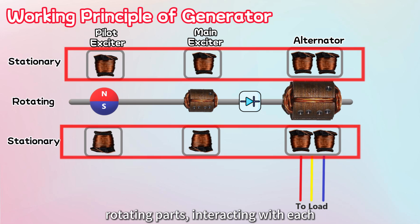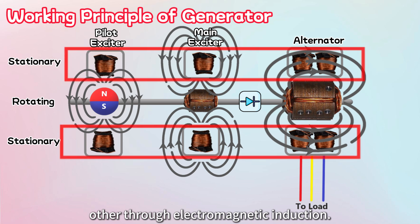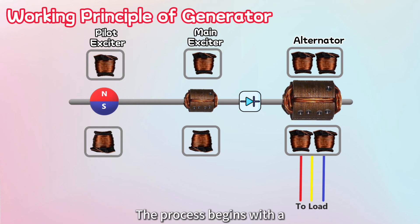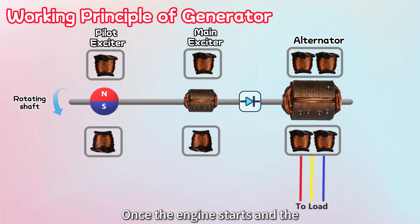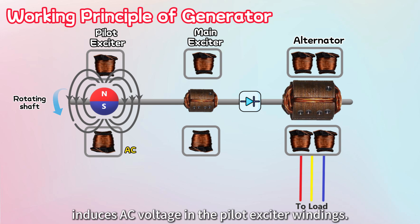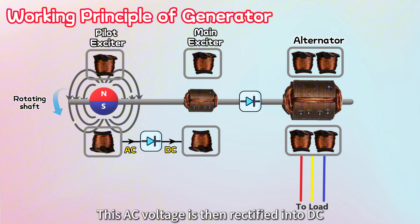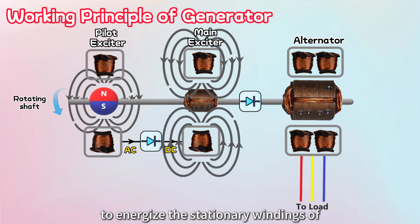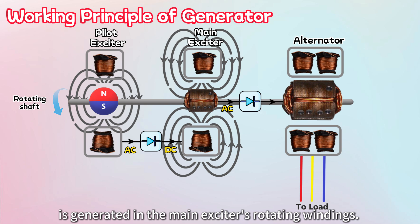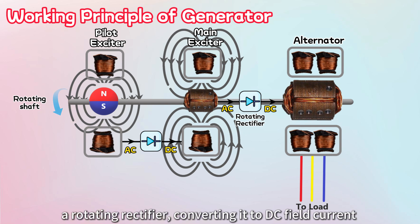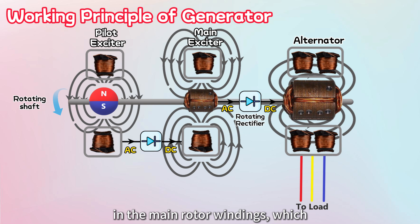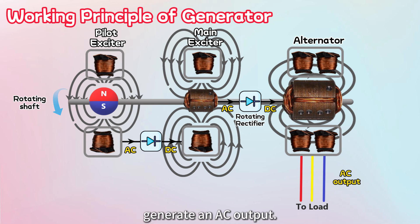These exciters contain both stationary and rotating parts interacting through electromagnetic induction. The process begins with a pilot exciter that uses a permanent magnet. Once the engine starts and the rotor begins to rotate, the rotating magnetic field from the permanent magnet induces AC voltage in the pilot exciter windings. This AC voltage is then rectified into DC to energize the stationary windings of the main exciter. Through electromagnetic induction, AC voltage is generated in the main exciter's rotating windings. This AC output is then rectified using a rotating rectifier, converting it to DC field current flowing in the main rotor windings. This setup produces a rotating magnetic field in the main rotor windings, which cuts across the main stator windings to generate an AC output.